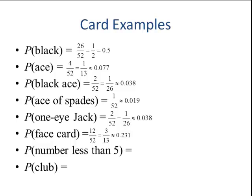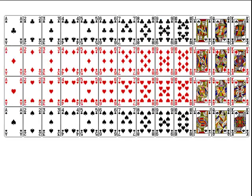A number less than 5, well that would be 4, 3, or 2. Each suit has them. So 3 cards times 4 suits, again, would be 12 out of 52, which would reduce to 3 out of 13. And the probability of a club, there's 13 clubs out of 52, and that reduces to 1 fourth. If you need to verify these, this is the sample space for cards.